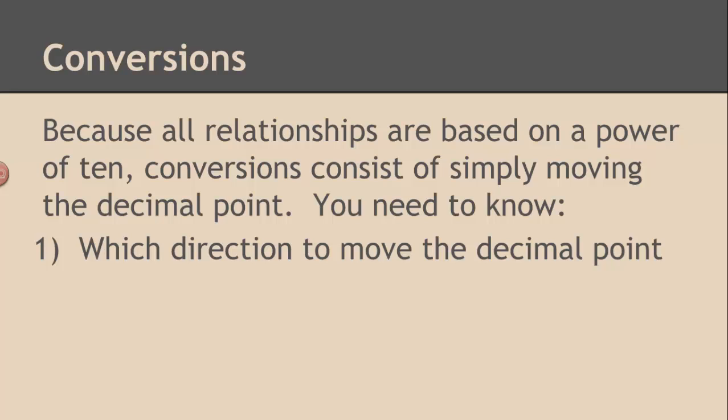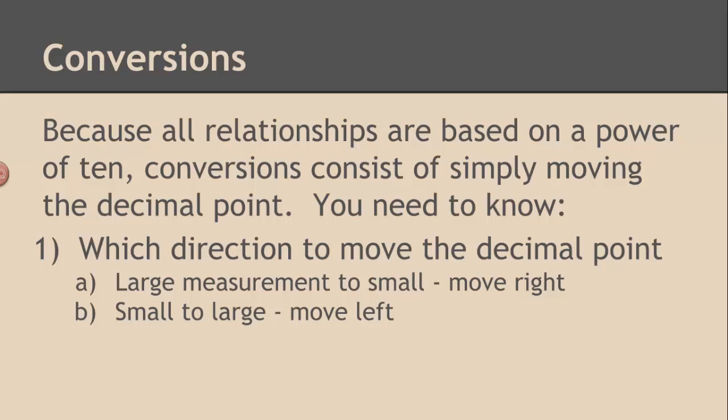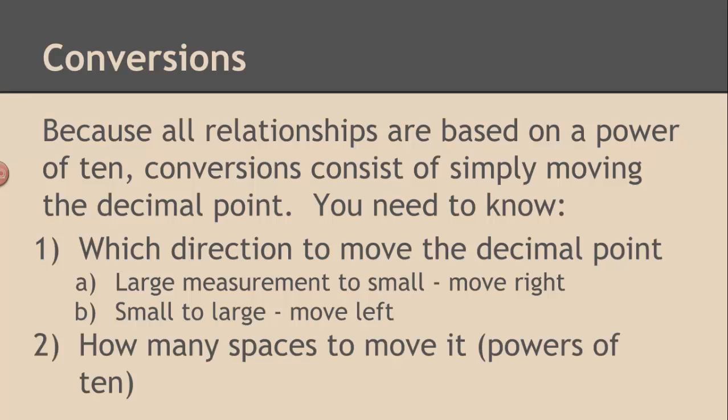And the direction that you move the decimal point in is dependent on whether or not you're going from a smaller measurement to a larger measurement or a larger measurement to a smaller measurement. If you're going from a large measurement to a small, move the decimal point to the right. Moving the decimal point to the right makes the number bigger. But that's what's going to happen. If you have like meters, which are very big, and you're going to centimeters, there's going to be a lot of centimeters in a smaller number of meters. The number has got to get bigger. So we move it to the right. If you're going the other way, small measurement to a large measurement, move the decimal point to the left. So that's the first thing you have to figure out. Which direction are you moving the decimal point? The second thing you have to figure out is how many spaces to move the decimal point. And that's based on the powers of 10 that we talked about. I find it useful to use the number line because you can just count spaces and the number of spaces is equal to the number of places to move the decimal point.